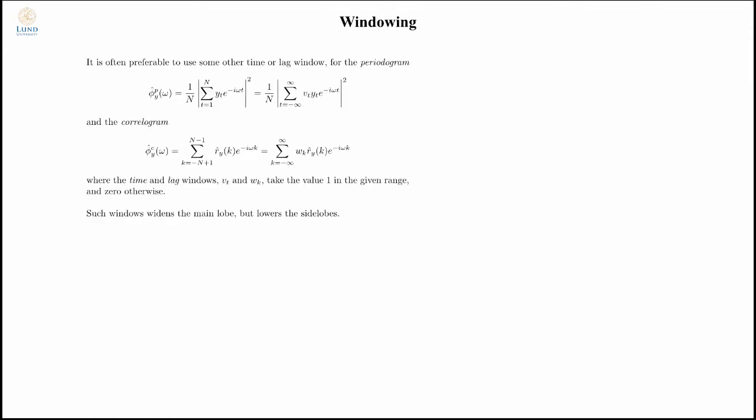Very often, you also choose to add a window. Here, v in the time domain or w in the lag domain. What these windows are is nothing but something that takes the value 1 over the interval 0 to n minus 1 here, or from minus n plus 1 to n minus 1. Obviously this doesn't change anything. By seeing this as a rectangular window, you're not adding anything to it. The point here is that you can change these windows into other windows. To understand what is going on, you want to see the effect of the windowing itself.